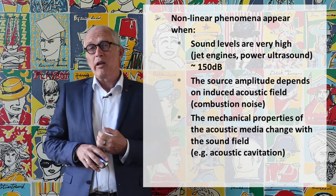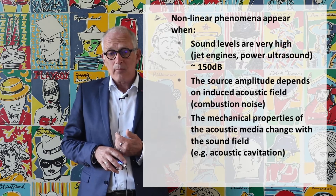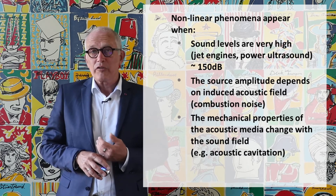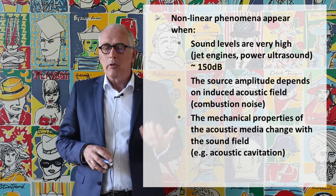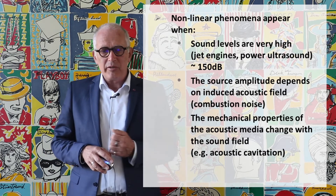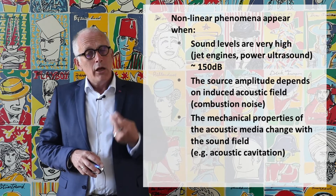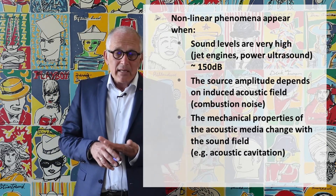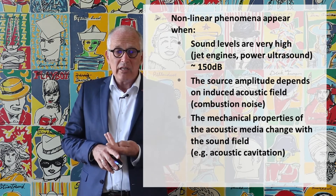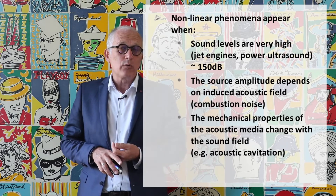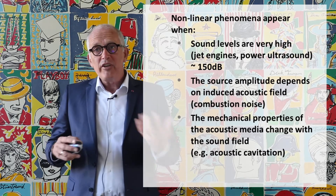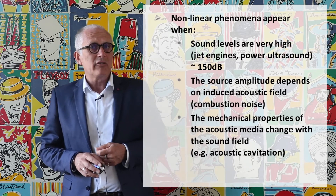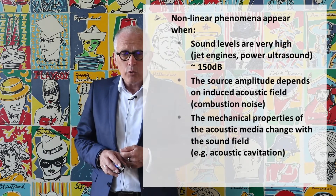The first case is when the sound level is extremely high — for instance, when using high-power ultrasound or when the sound level approaches 150 dB and more. The second case is when the source amplitude depends itself on the induced acoustic field, meaning there is a feedback from the sound field onto the sound source, which is typically the case of combustion noise.